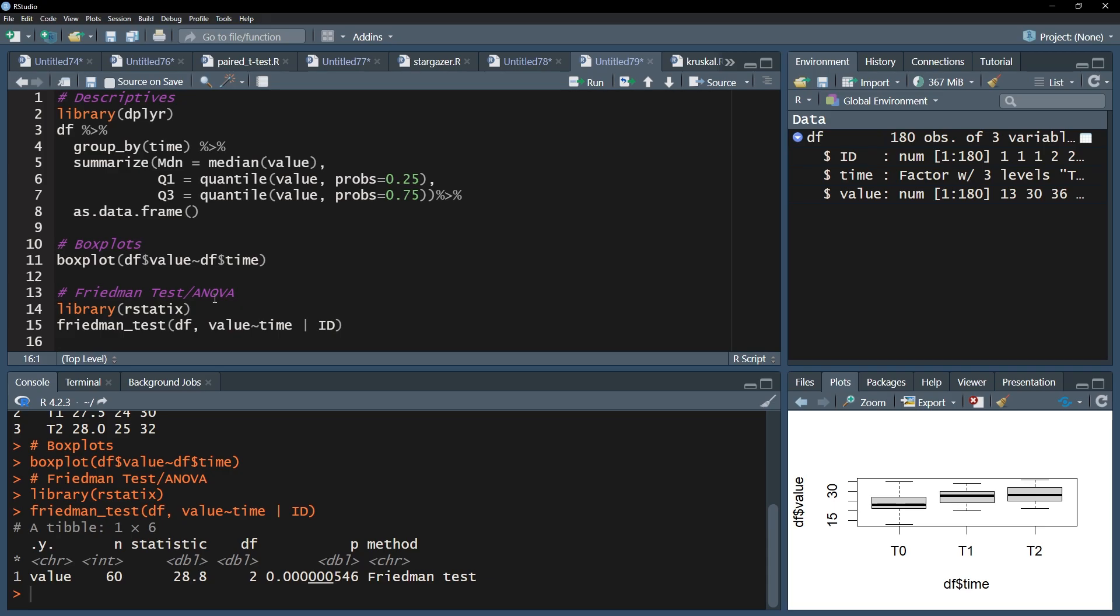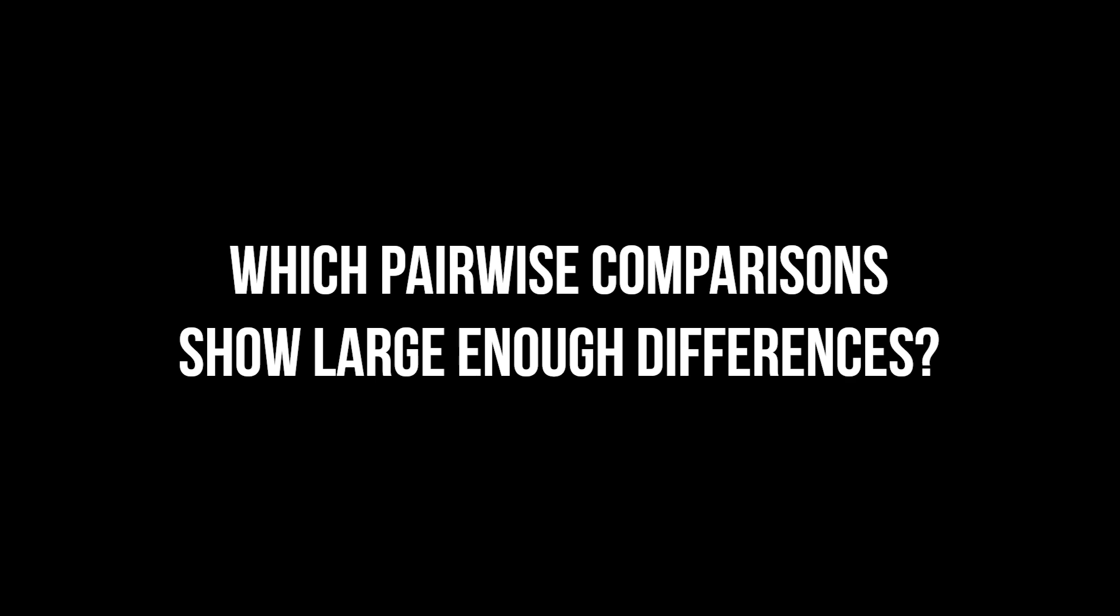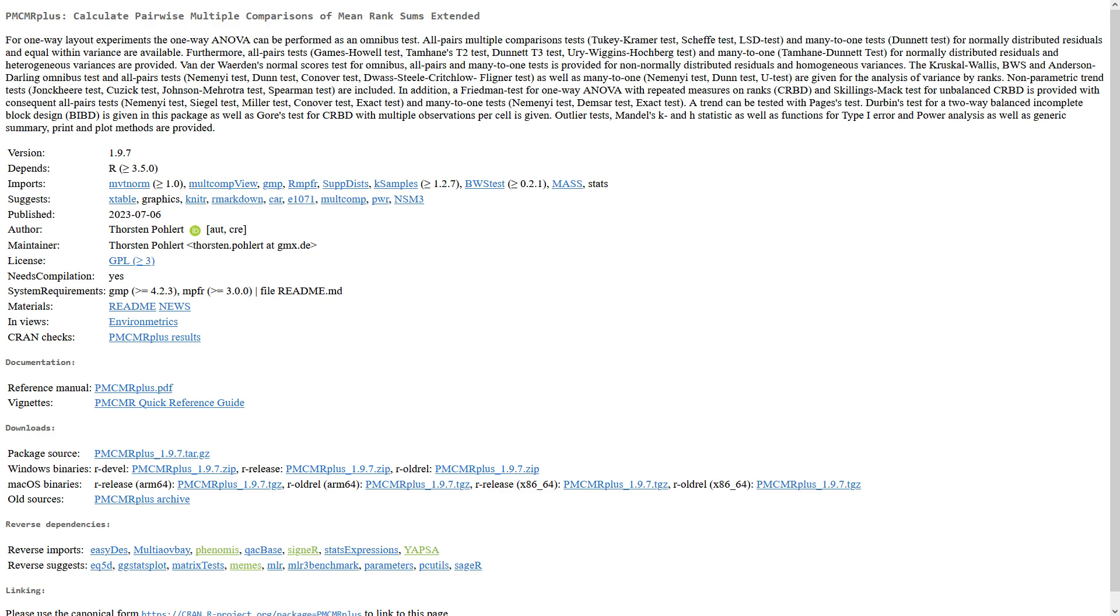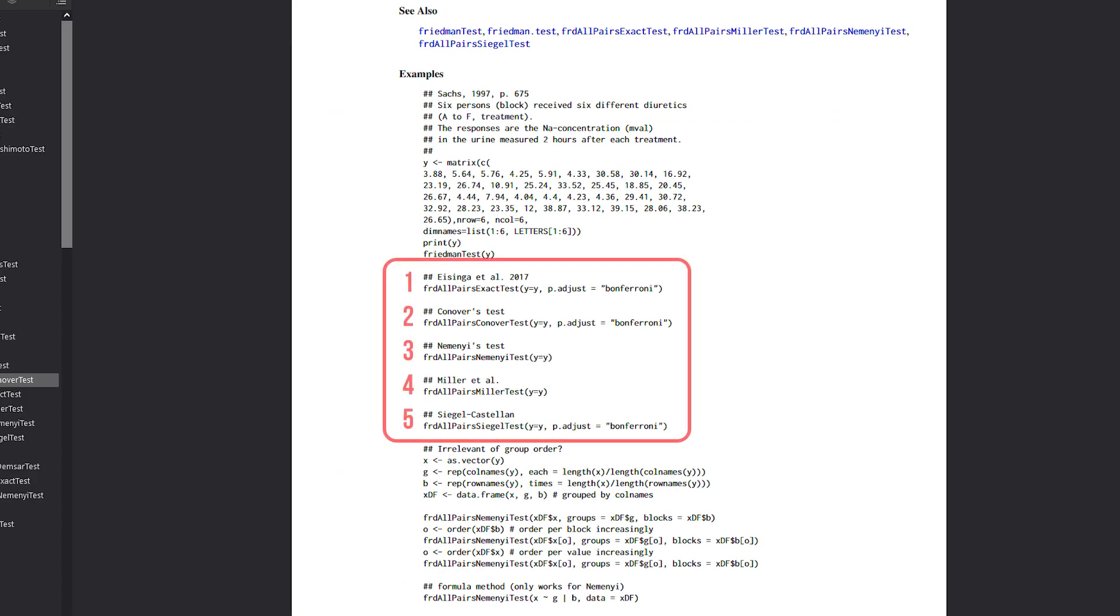After a significant Friedman test, post-hoc tests should be calculated to see between which of the measurements differences exist. To achieve this, pairwise comparisons are being done. This is where the tricky part starts. There is no clear opinion on which pairwise comparison is the right one. The pmcmrplus package provides 5 possible functions. Eventually, there seems to be no right or wrong method.